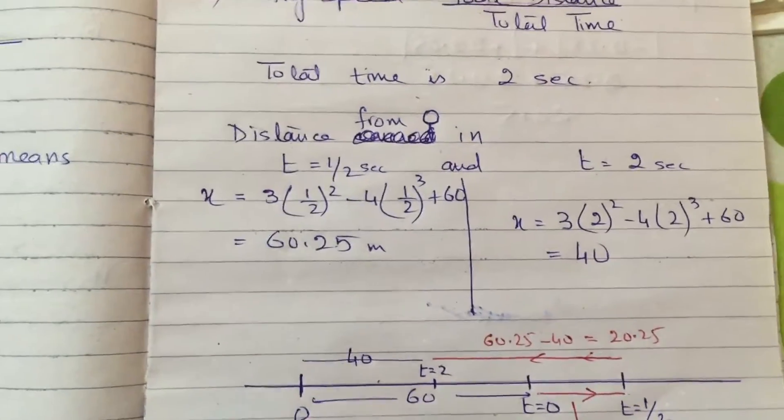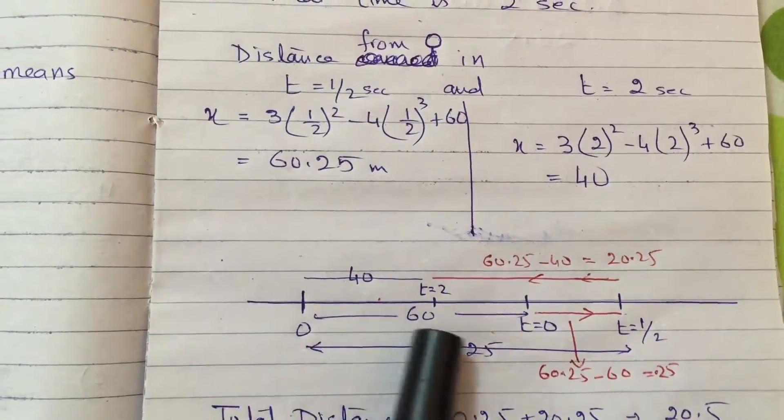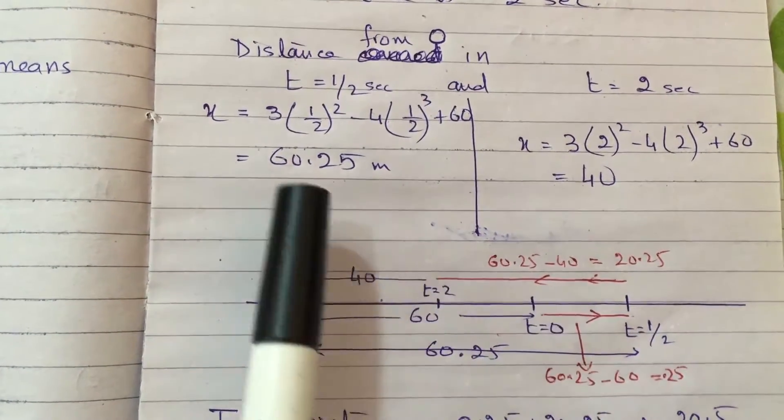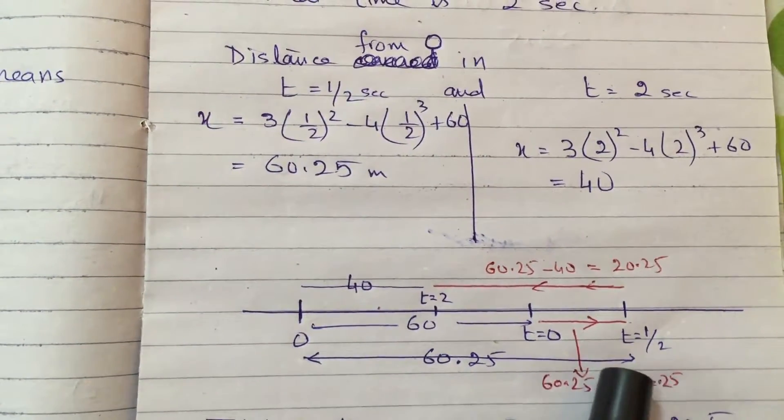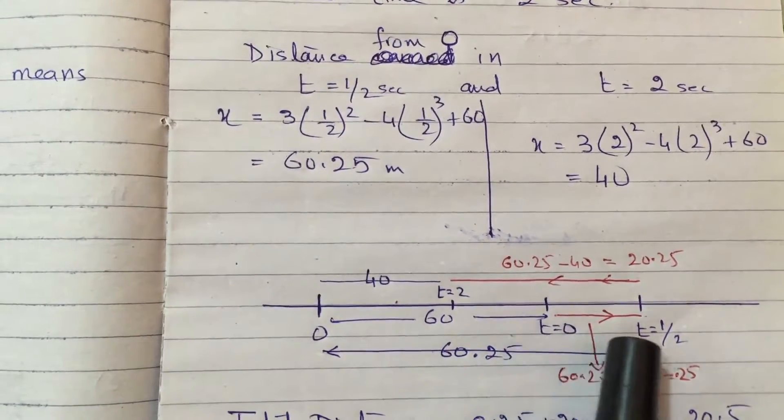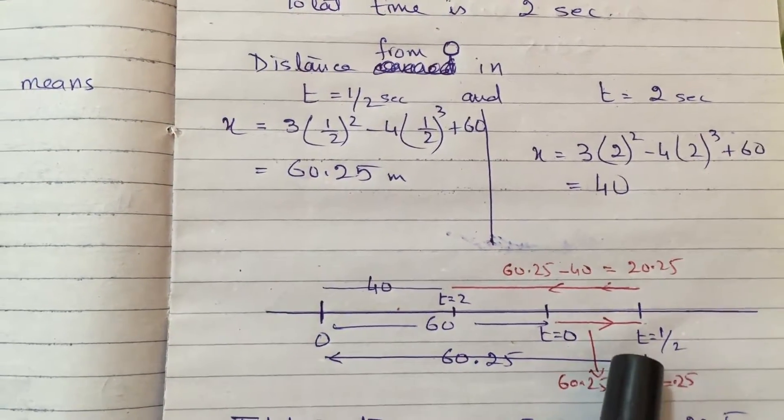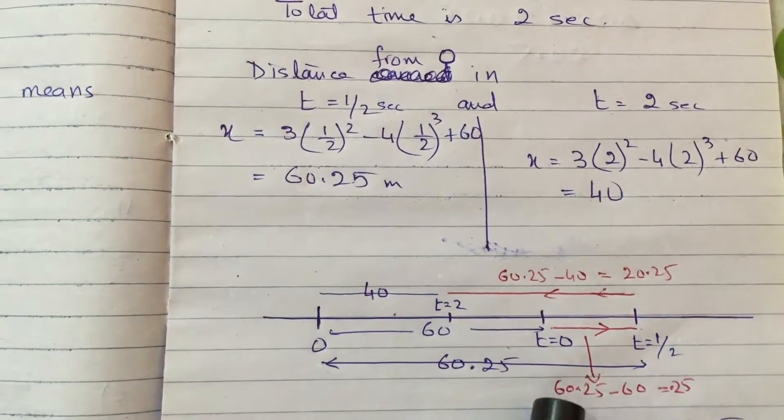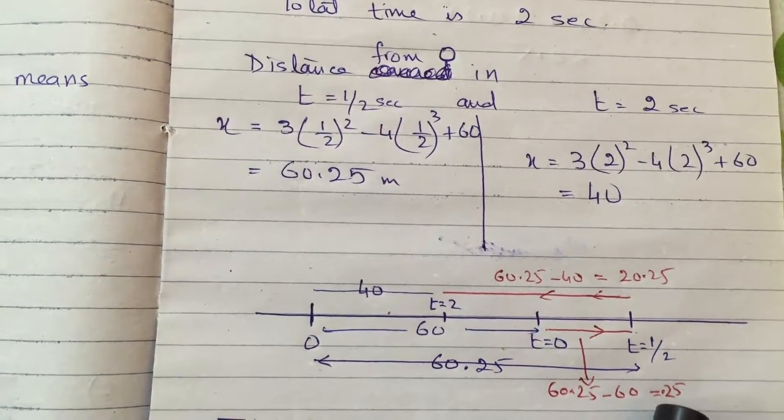It means when the object was here, 60 meters from origin initially, in half second when the answer is coming 60.25, it means the distance is coming from here. Now this is not the distance covered by the object or particle. The distance covered is only this much. So you will do 60.25 minus 60 because this whole is 60.25 and this part is 60. When you subtract you get 0.25. It means in half second you have covered only 0.25 meters.